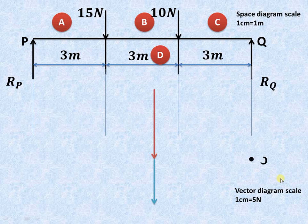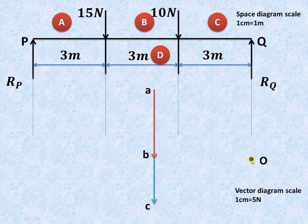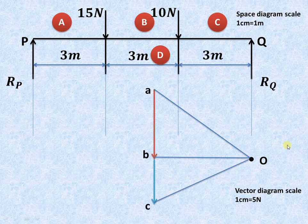Now take any point O, known as the pole, in the space. AB is 15 Newton represented by 3 centimeters, and BC is 10 Newton represented by 2 centimeters. We have chosen any point O known as the pole, and now we'll join A with O, then B with O, and then C with O. These are the rays obtained by joining A, B, and C with O.